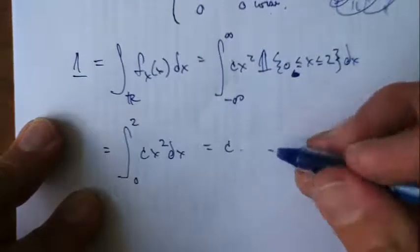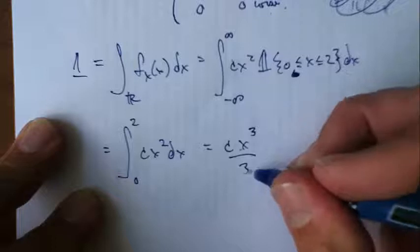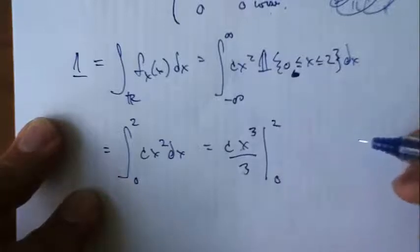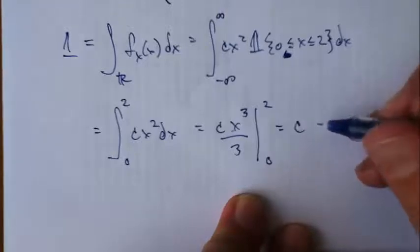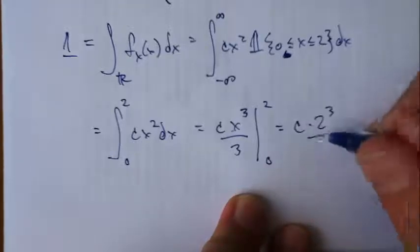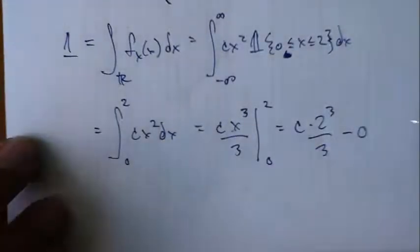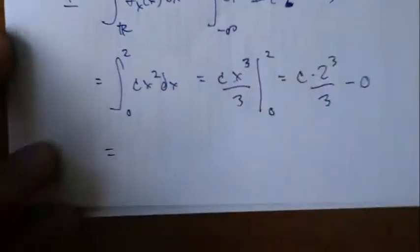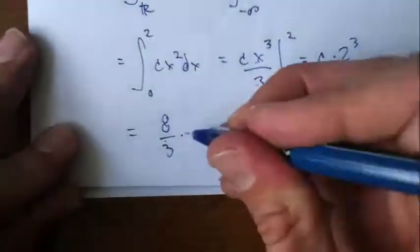So I can pull the c out and then, how do you integrate this thing? I think it's like this, 0 to 2. And then, so this is going to be c times 2 cubed over 3 minus 0. So this whole thing is 8 thirds times c.